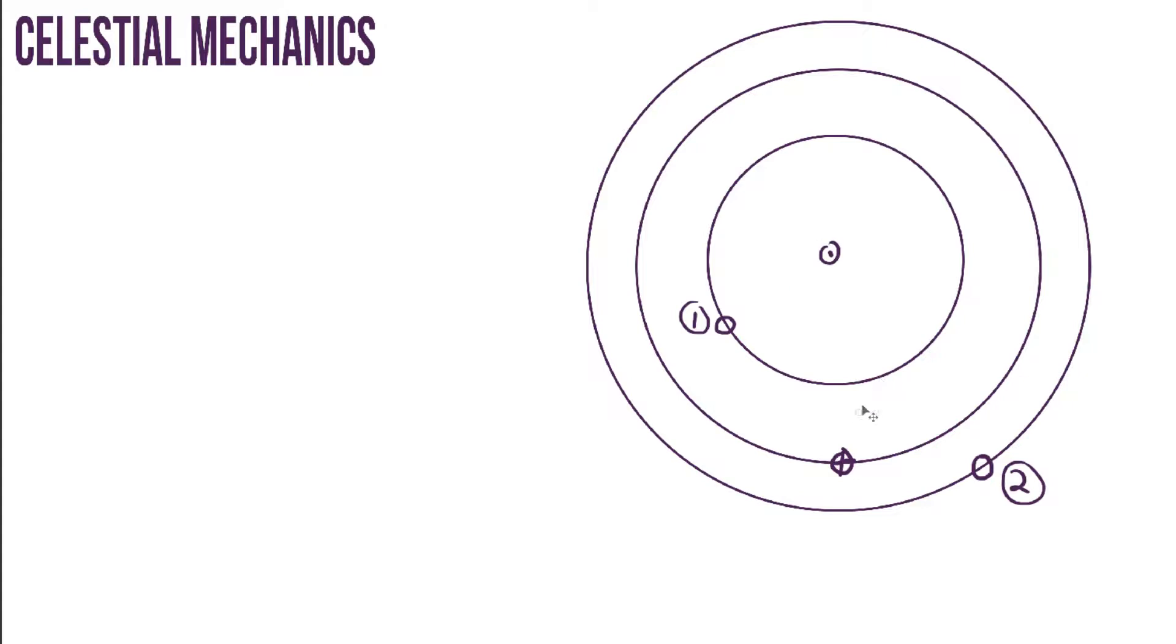In the center here is the Sun, this planet is the Earth, and these are just two planets. So planet 1, and basically any planets that orbit closer to the Sun than the Earth, these planets are called inferior planets.